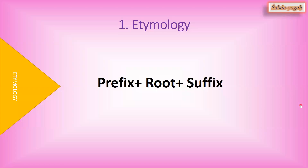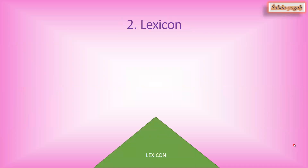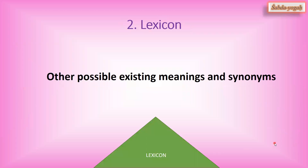The second dimension that will be looked into as part of the Shabda Yoga series for each and every yogic terminology is the lexicon. In understanding the meaning of any word, etymology of course contributes a lot — the prefixes, suffixes, the root meaning, etc. But at the same time, the meanings of words are not merely dependent on etymology alone. As per Sanskrit grammar, we see that conventions of usage of the terms also add meanings to terminologies which may not be brought to light by etymology alone.